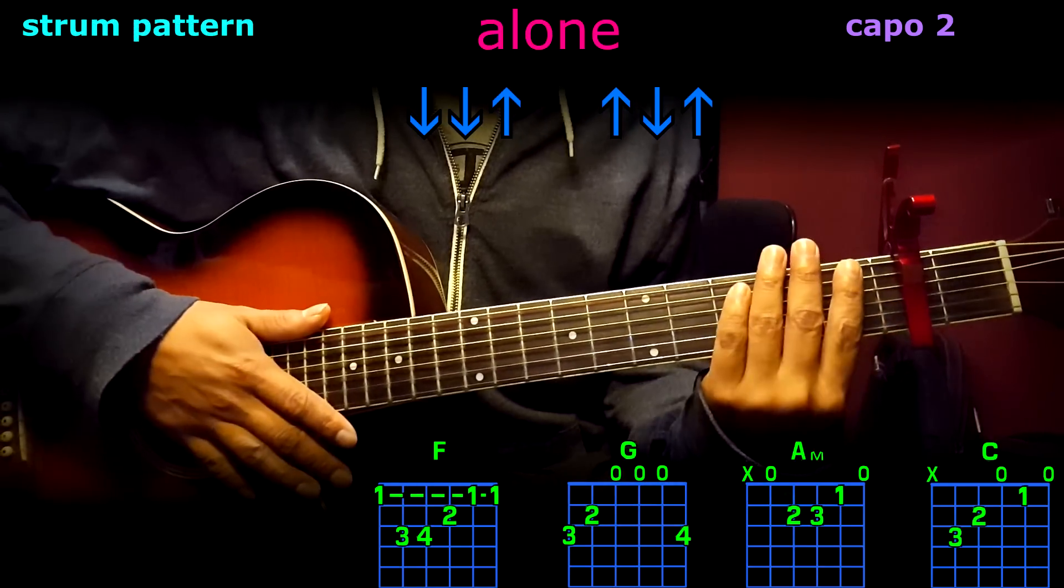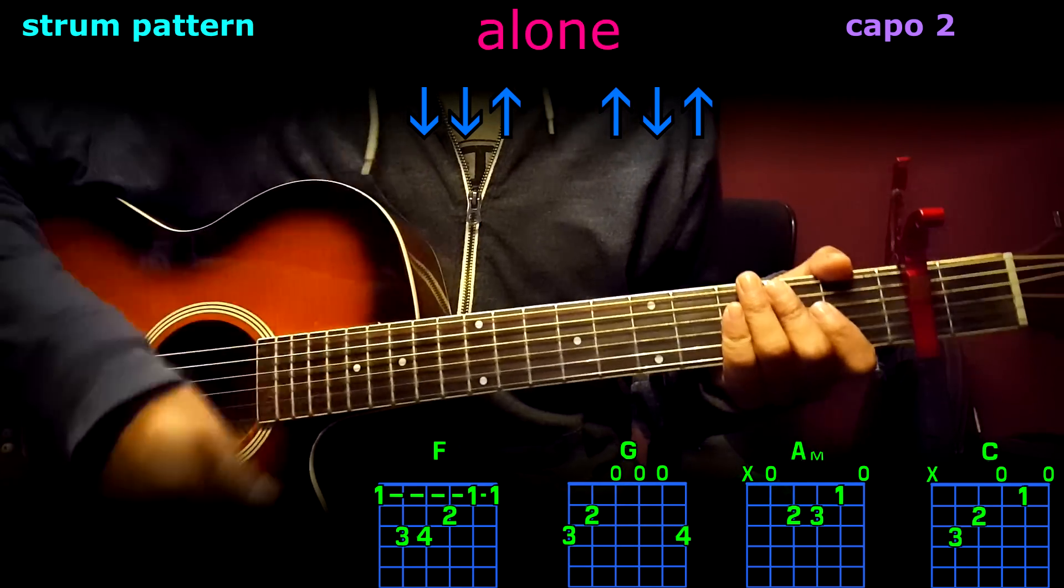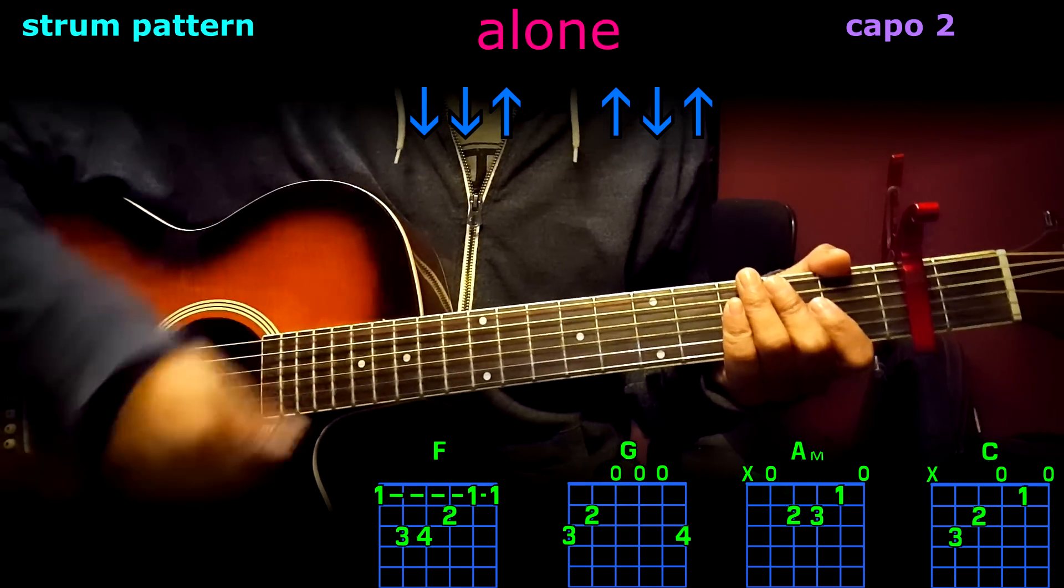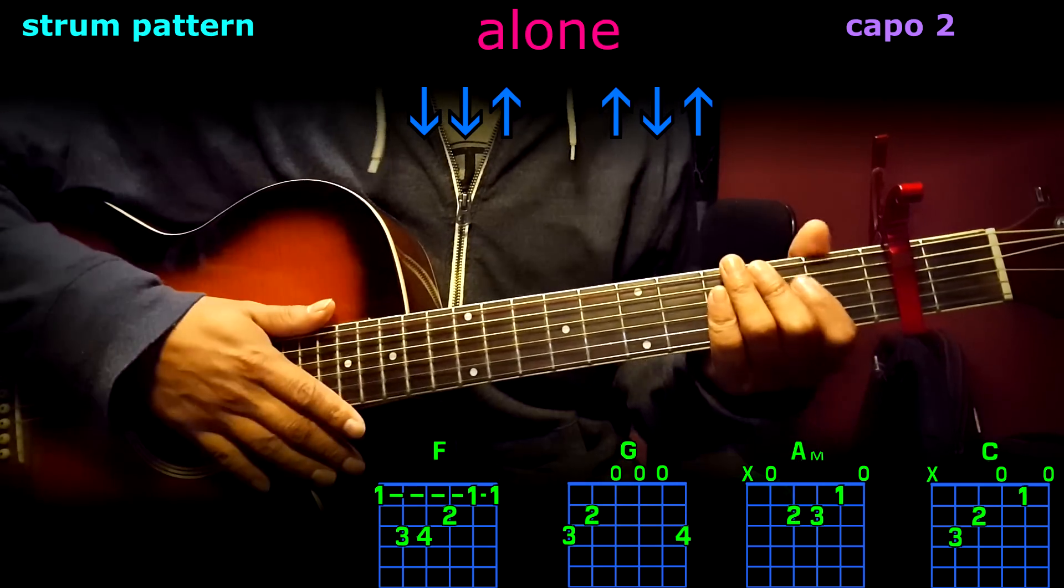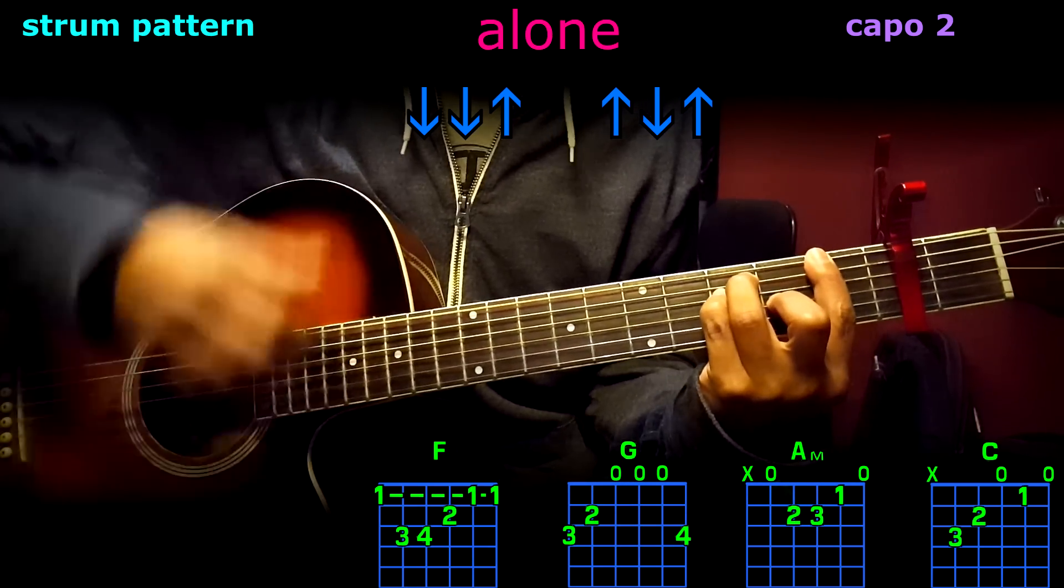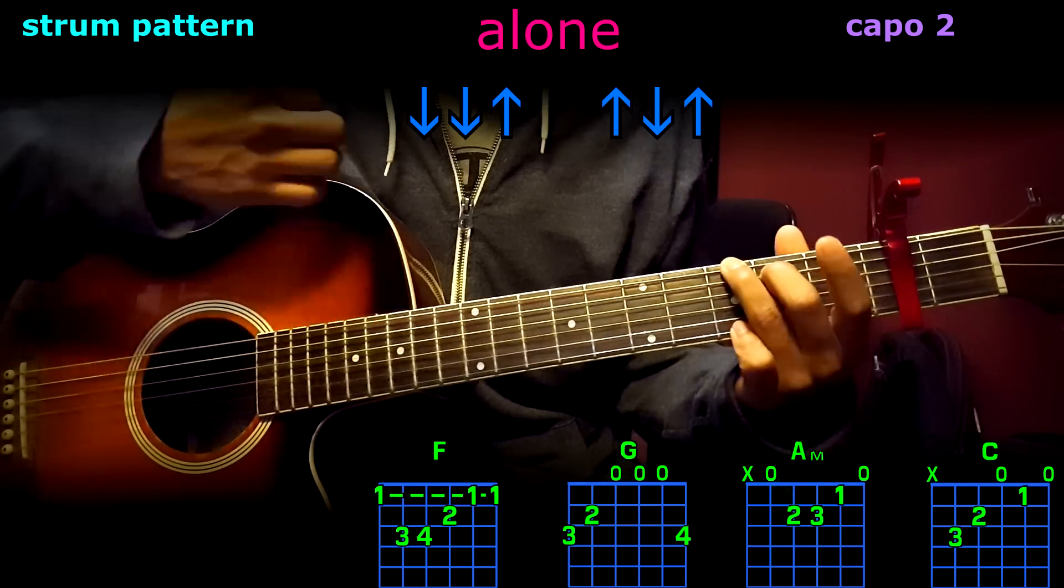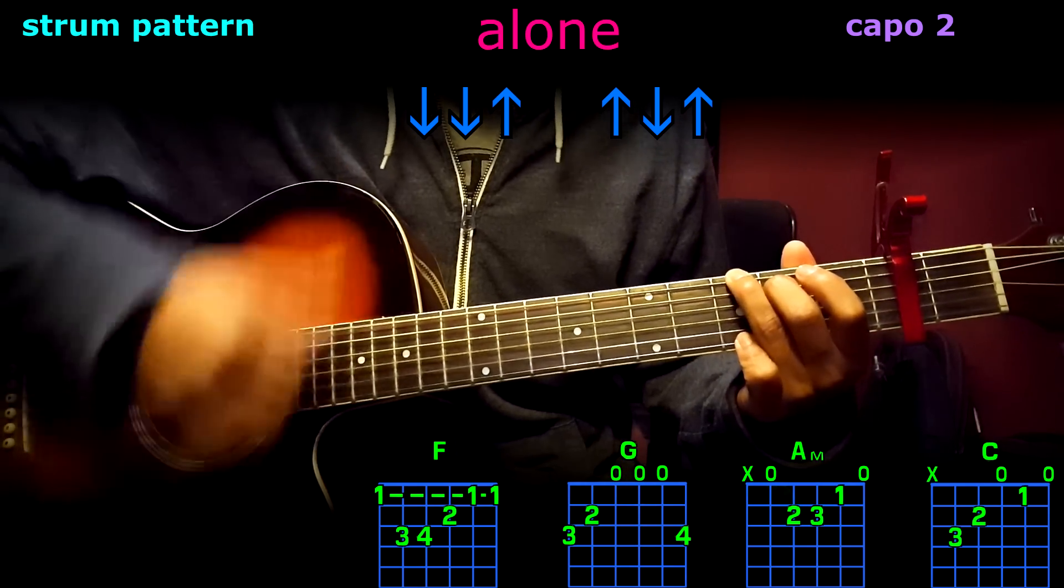Cool, the strum pattern is going to be this: down, down, up, up, down, up. Once again, down, down, up, up, down, up, and that's going to be per chord. For example, F: down, down, up, up, down, up. Now G: down, down, up, up, down, up.